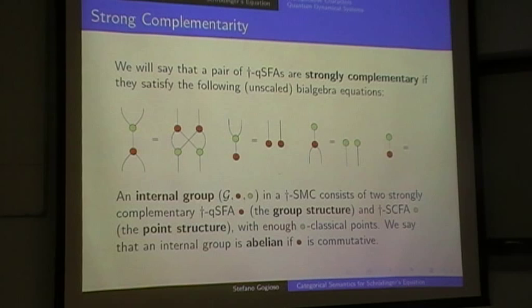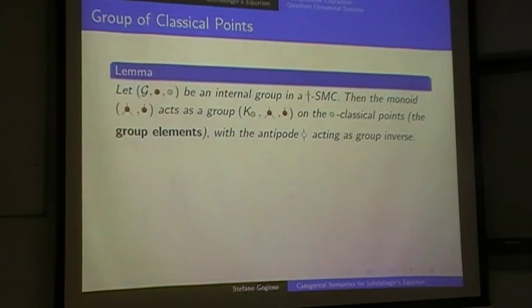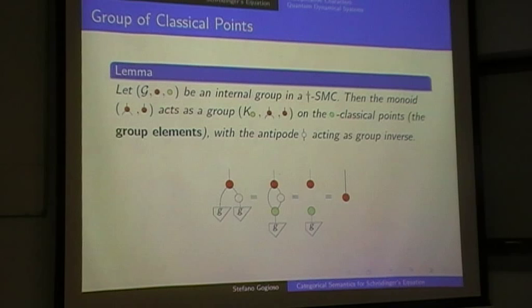The reason it's called an internal group is that, as Will already showed, by Hopf law it can be shown that the red monoid acts as a group on the green classical points. This is just a consequence of the fact that the antipode cancels out in Hopf law, so the antipode acts effectively as a group inverse in this case.